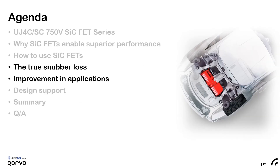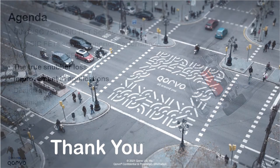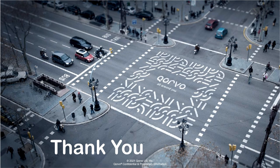In this episode, we shared how to use the user guide to pick a good starting condition. We demonstrated that using a small snubber with low gate resistance is more effective and efficient than simply using a high gate resistor to control VDS spike and ringing. In the next episode, we will explain why snubber is more efficient and investigate the true snubber resistor loss. Thank you very much for your attention. Please stay tuned for the next video.